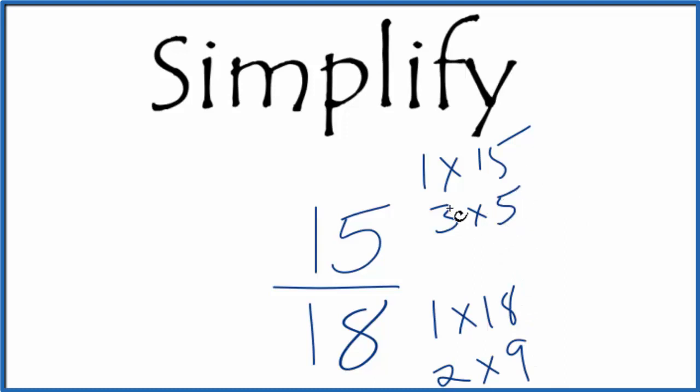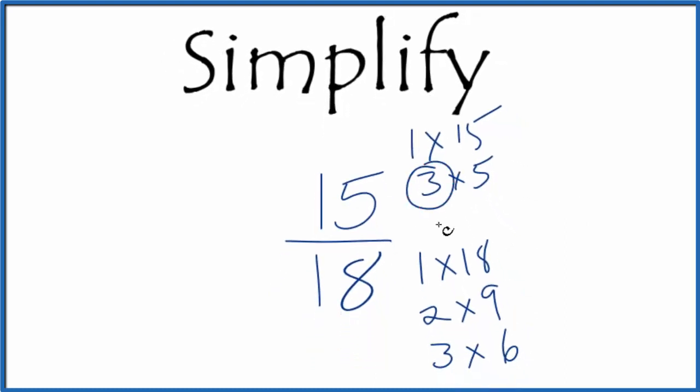So as we look for the greatest common factor, we see here in the numerator that's 3, and in the denominator that's 3. So we're going to divide each of these by 3.